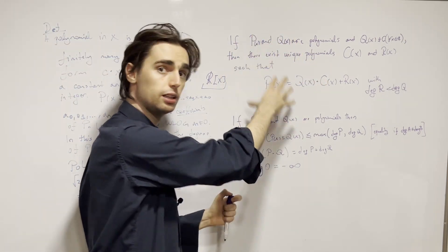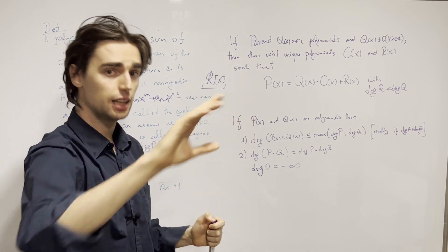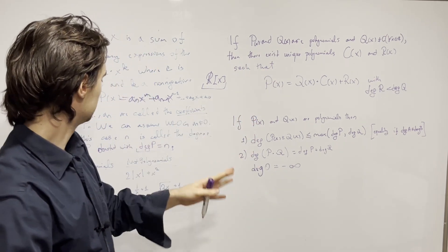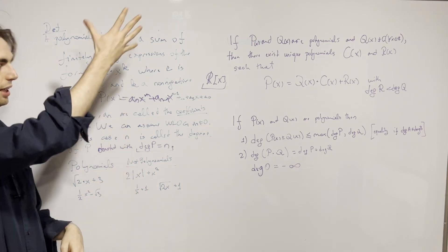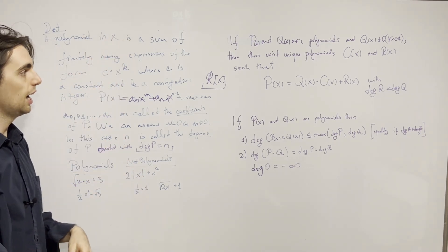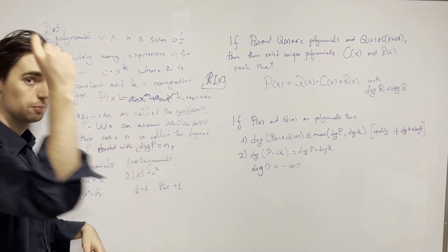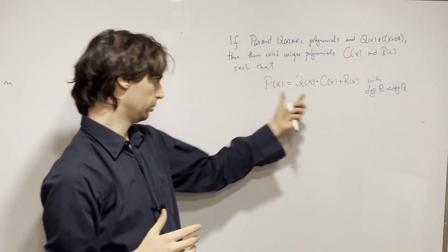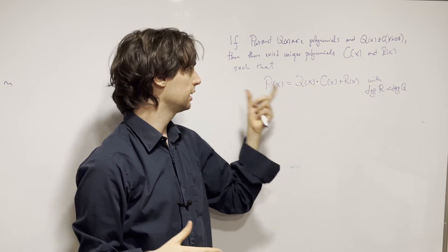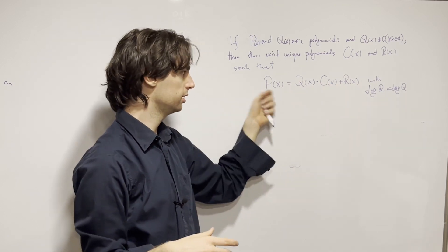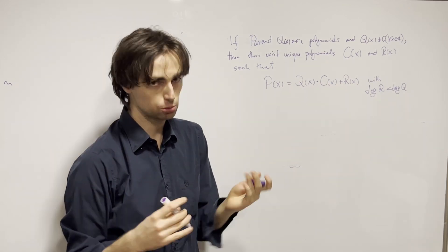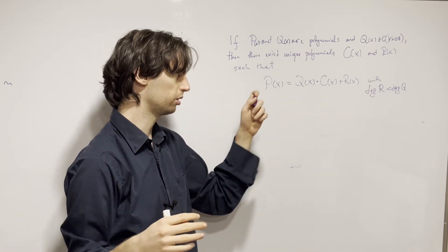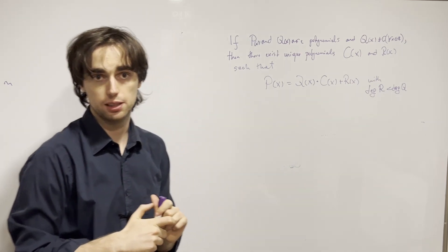Now I'm going to invite you to pause and try to prove this claim. Pause for at least 20 minutes, ideally 40, but not more than an hour. One thing I realize I haven't said: what does it mean for two polynomials to be equal? It means all the coefficients of one polynomial and the other are the same. That's what equality means here.